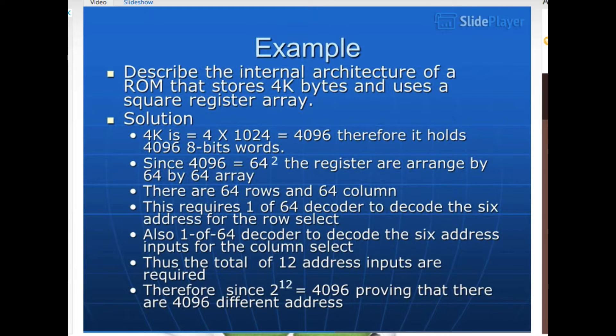Example. Describe the internal architecture of a ROM that stores 4K bytes and uses a square register array. Solution: 4K equals 4 by 1024 equals 4096, therefore it holds 4096 8-bit words. Since 4096 equals 64 squared, the registers are arranged in a 64 by 64 array. There are 64 rows and 64 columns. This requires 1 of 64 decoder to decode the 6 address inputs for the row select. Also, 1 of 64 decoder to decode the 6 address inputs for the column select. Thus a total of 12 address inputs are required. Since 2 to the 12 equals 4096, proving that there are 4096 different addresses.